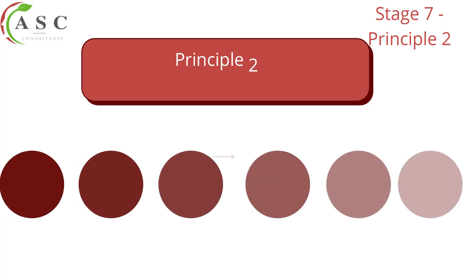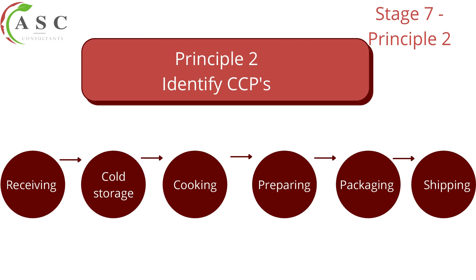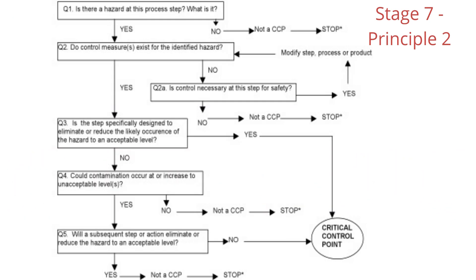Now let's move to principle number two — identifying critical control points. A critical control point is a process step that aims to either eliminate, prevent, or reduce a significant hazard to an acceptable level. For example, a cooking step is a CCP because cooking has a negative influence on pathogens — it can kill them. Normally we use a decision tree to identify what a CCP is, though it is not compulsory to use one.